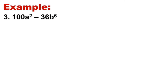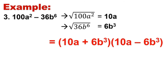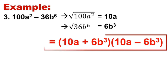Now let's get the factors. We have to get the square root of each term. The square root of 100a squared is 10a — square root of 100 is 10, and square root of a squared is a. For the square root of 36b raised to 6, it is 6b cubed — square root of 36 is 6, and for b raised to 6 we divide 6 by 2 to get b cubed. So the answer will be 10a plus 6b cubed times 10a minus 6b cubed.